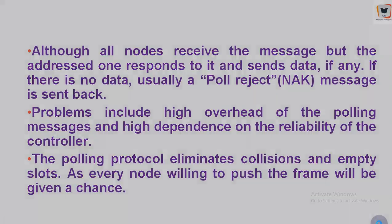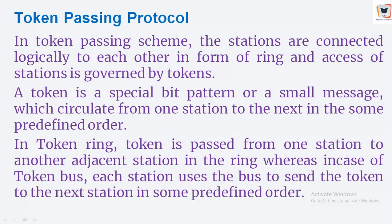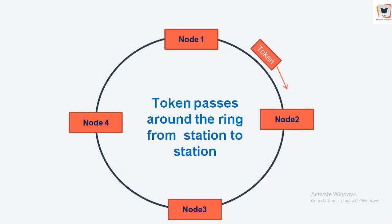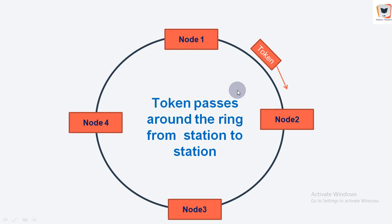To eliminate these issues, there is the token passing protocol, the second predominant taking turns protocol. In this protocol there is no master node. A small special-purpose frame called a token is exchanged among the nodes in some fixed order, either clockwise or anticlockwise. For example, node 1 captures the token and holds it until it finishes sending all its frames, then releases the token back into the broadcast channel.